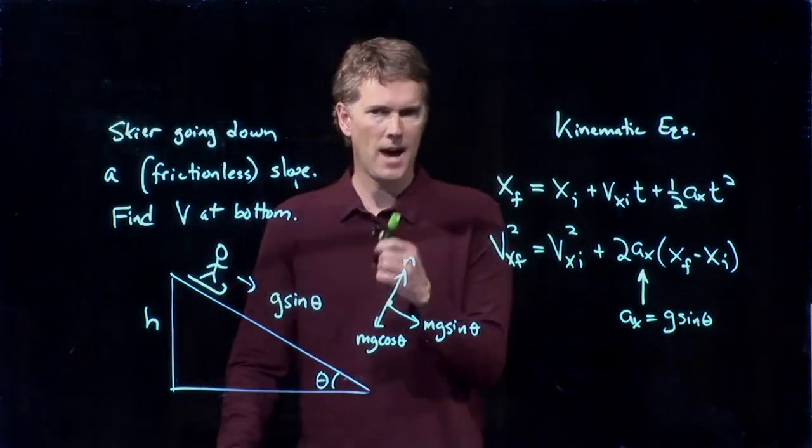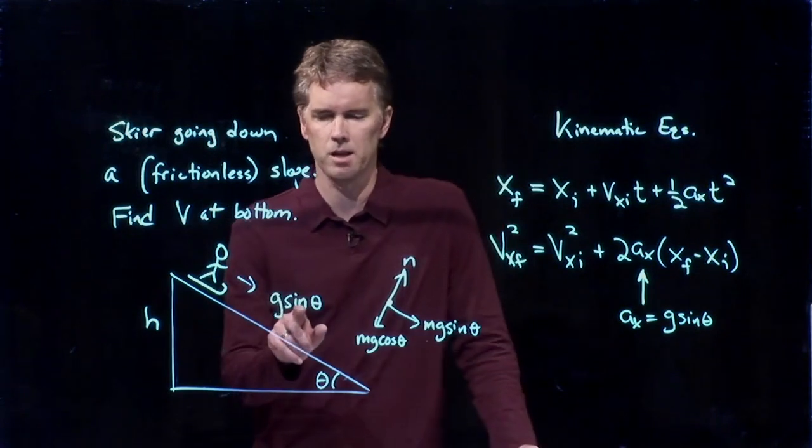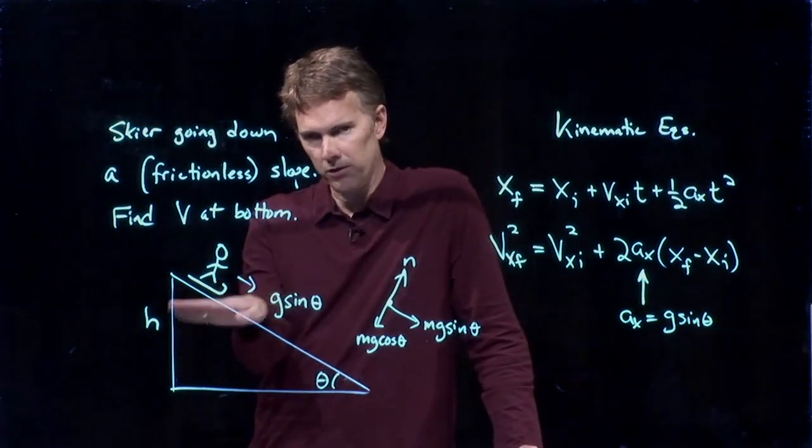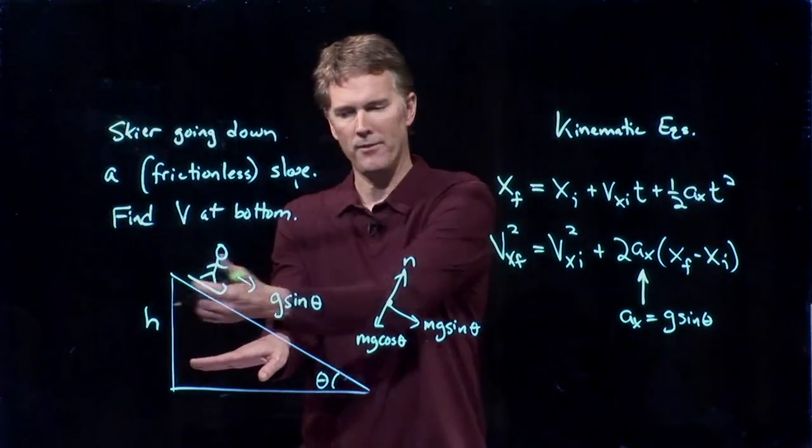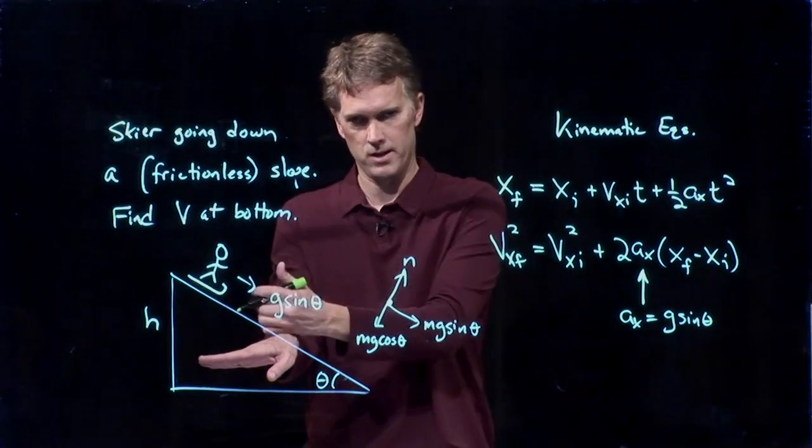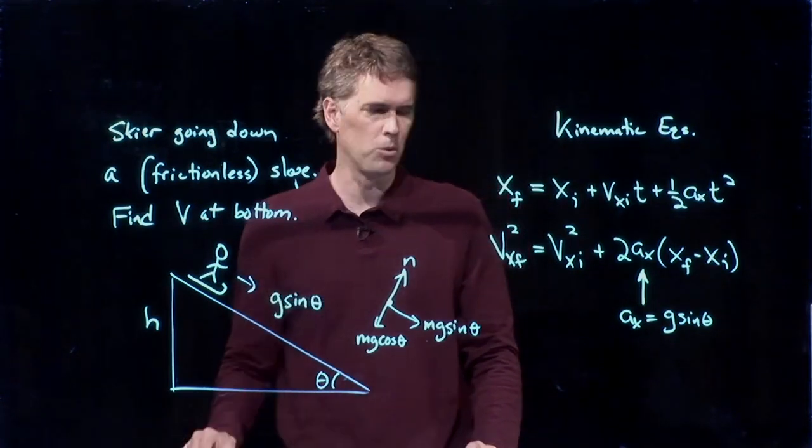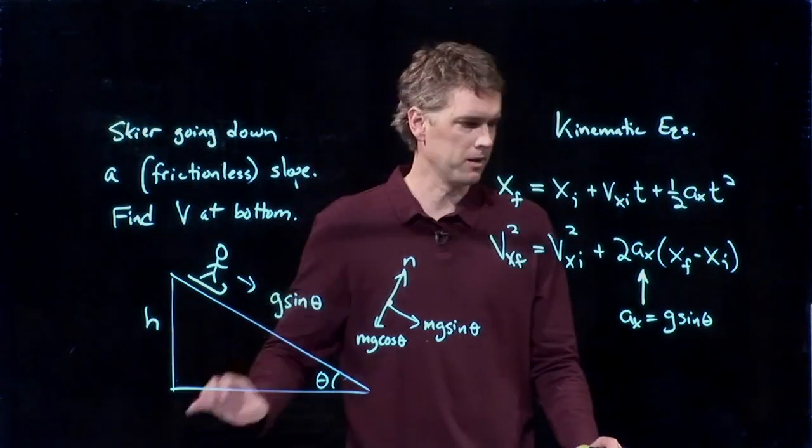So in this case, we've got this. A sub x equals g sine theta. Now, how do you know that? How do you know it's sine theta and not cosine theta? Because if it goes flat and theta goes to zero, I had better not have any acceleration horizontally. Sine of zero goes to zero. Cosine of zero goes to one. So that's how you can double check that.